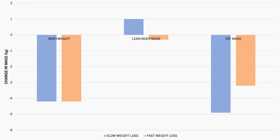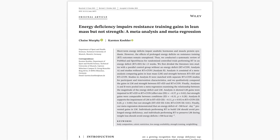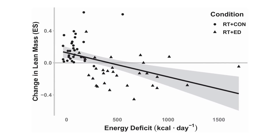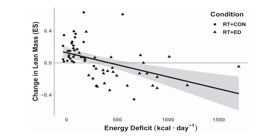So how much of a calorie deficit is required to mitigate losses in lean mass during weight loss? This was explored in a meta-regression which explored the influence of the magnitude of a calorie deficit on changes in lean mass. It was found that larger calorie deficits tend to increase the likelihood of lean mass losses, while smaller calorie deficits may mitigate lean mass losses and potentially even permit further gains. The approximate point at which lean mass losses tend to be observed is when the calorie deficit is greater than around 500 calories per day.